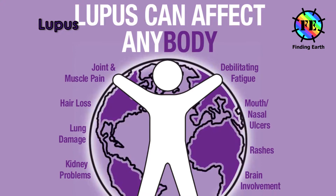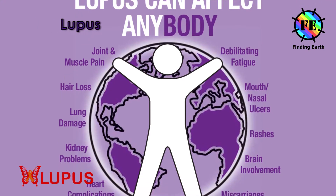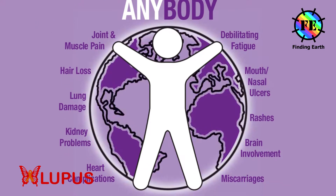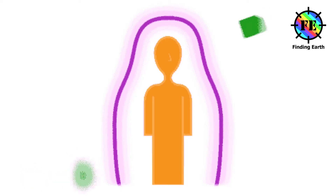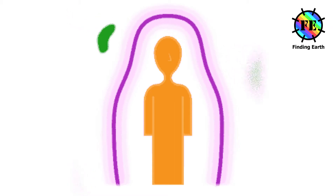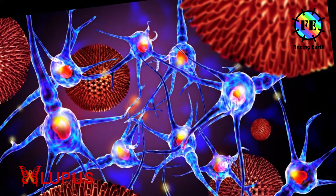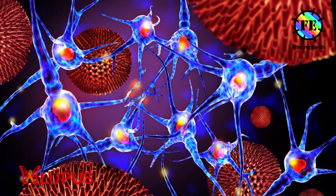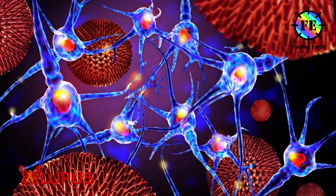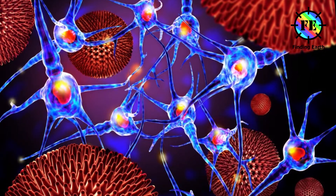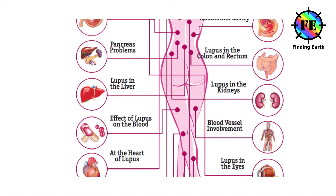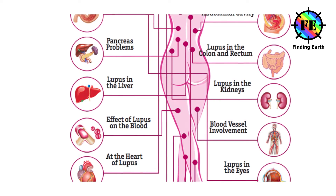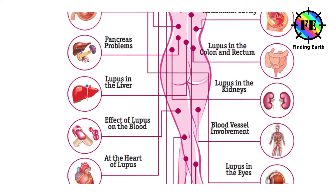Lupus erythematosus is a name given to a collection of autoimmune diseases in which the human immune system becomes hyperactive and attacks healthy tissues. Symptoms of this disease can affect many different body systems including joints, skin, kidneys, blood cells, heart and lungs.